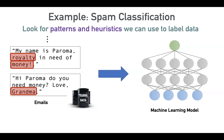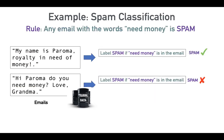Essentially what we're doing at a high level is relying on some patterns, some domain knowledge, or some external knowledge that we have, and using that to assign these labels. What we do with programmatic supervision is take advantage of that and try to make it more systematic.